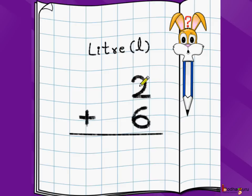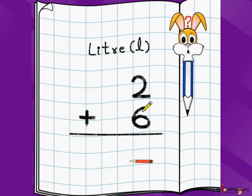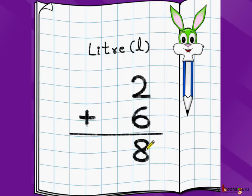Let's say you have two liters of juice and you got six liters of juice more. So two plus six is eight. So we have eight liters of juice. We take two numbers with liters and the answer is also in liters.